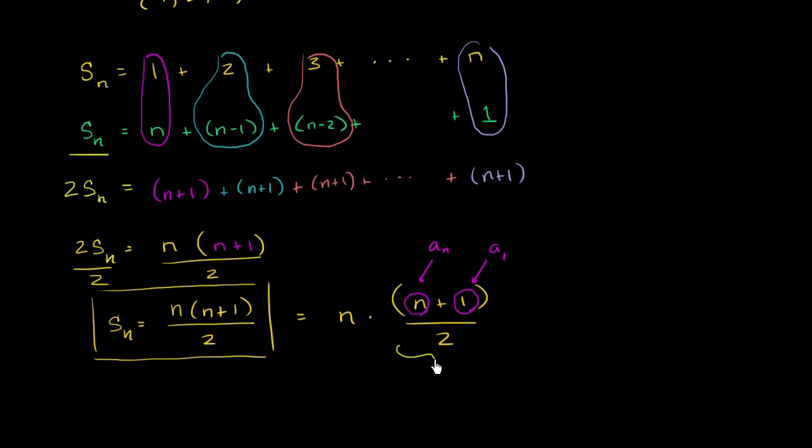This right over here is the average of a sub one and a sub n. And then I'm multiplying that times n. And what I'm curious about is whether this is going to be true for any arithmetic sequence, that the sum of it is going to be the average of the first and the last term times the number of terms.